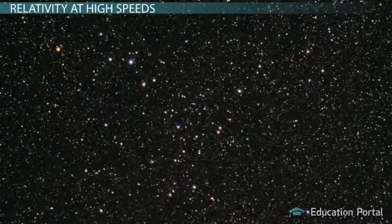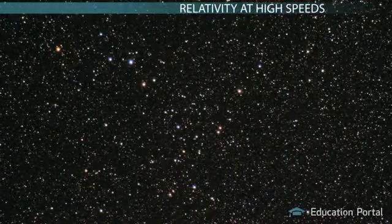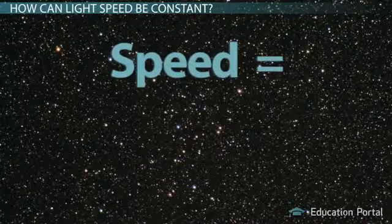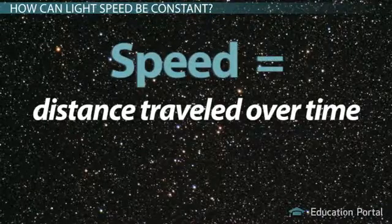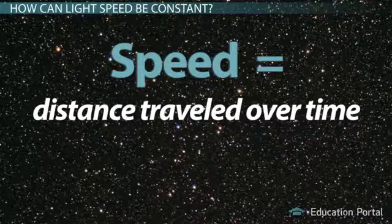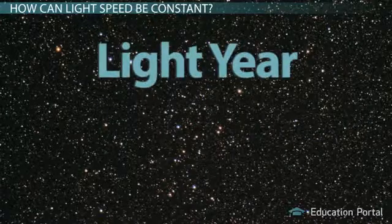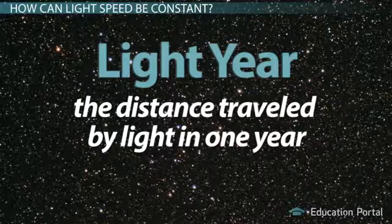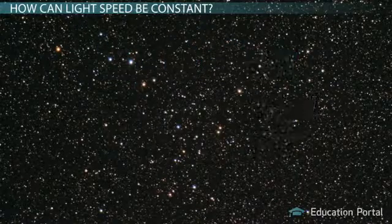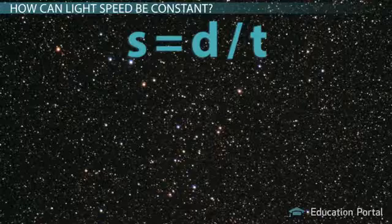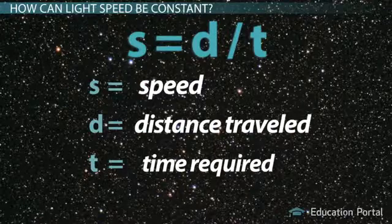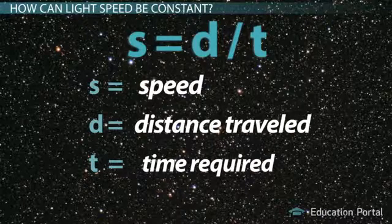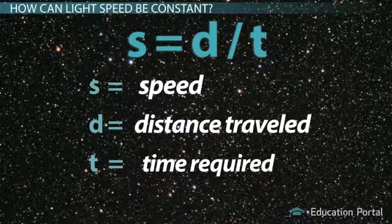We can understand Einstein's proposal by breaking down speed. Speed is simply a measure of distance traveled over time. In fact, we use the term light year to express the distance traveled by light in one year. The formula for speed is S equals D divided by T, where S is speed, D is distance traveled, and T is the time required to travel that distance.